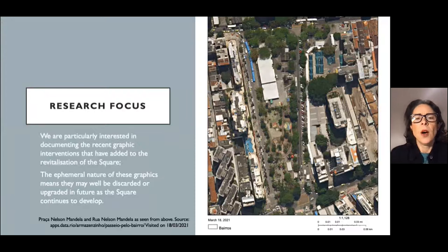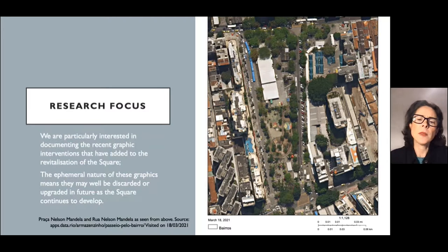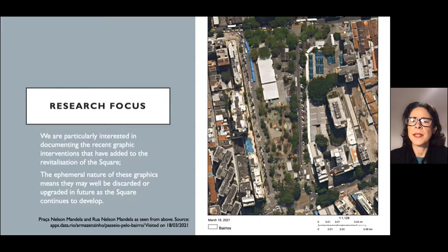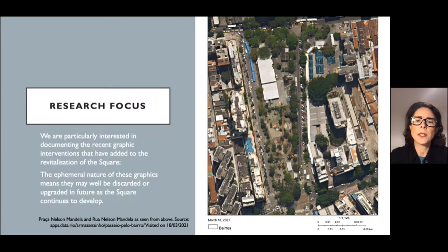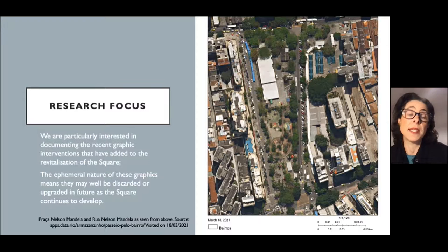On the right-hand side here we can see an overview of the square. We are particularly interested in documenting the recent graphic interventions that have added to the revitalization of the square — it was only in 2019 that graphic representations were added. The ephemeral nature of these graphics means they may well be discarded or upgraded in the future as the square continues to develop. The quality of these graphics makes us as researchers wonder what further action will be taken as they suffer the effects of time.